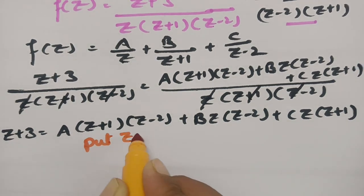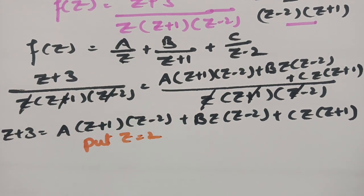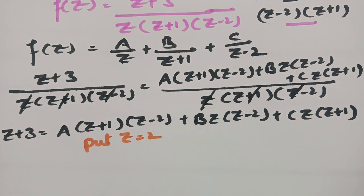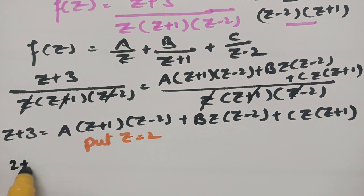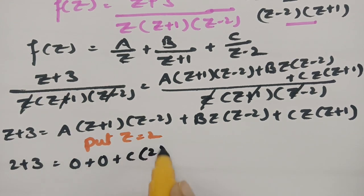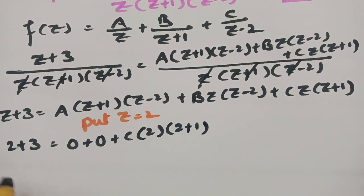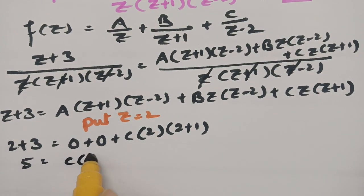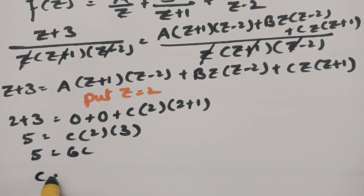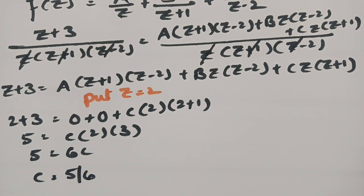To find C, put z = 2. The A and B terms become 0, and we get 2+3 = C·2·(2+1), so 5 = 6C, giving C = 5/6.